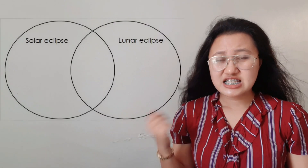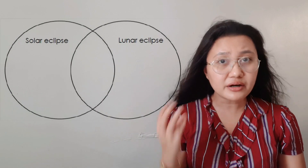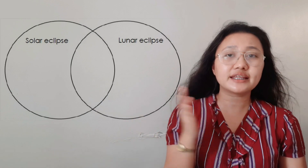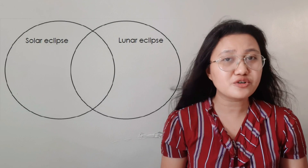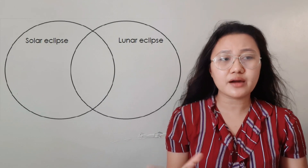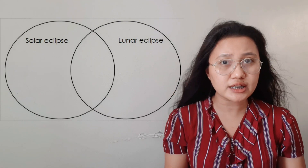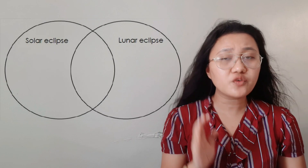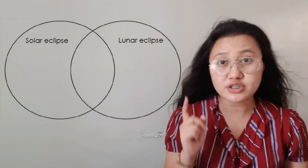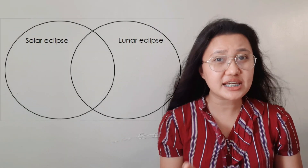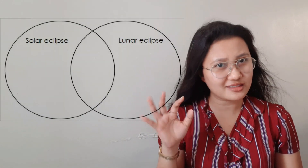For learning task number five, you will use a Venn diagram to compare and contrast solar eclipse and lunar eclipse. The left circle is for solar eclipse, the right circle for lunar eclipse, and the overlapping middle section is for their similarities. There are 10 descriptive statements, and you need to place each statement under solar eclipse, lunar eclipse, or in the middle if it applies to both.